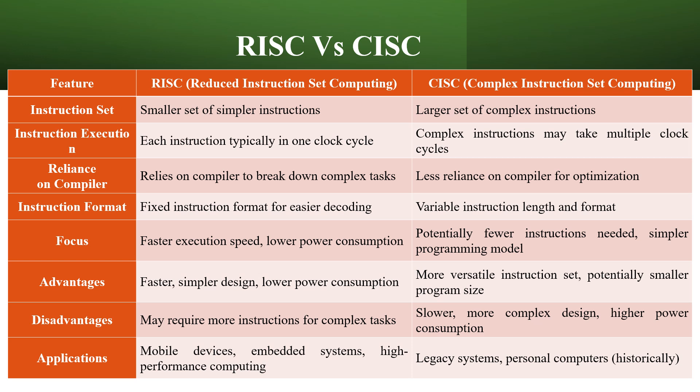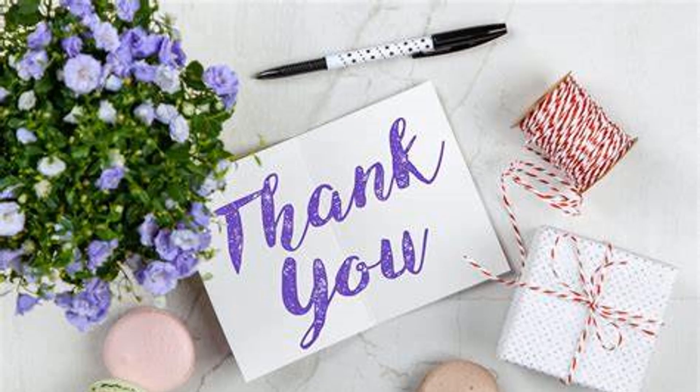For applications: RISC is used in mobile devices, embedded system technologies such as home automation and operation of washing machines and refrigerators. CISC is used for personal computers — historically and traditionally developed electronic devices use CISC architecture. Hope you have understood these concepts. Please stay tuned for more information. Thank you.